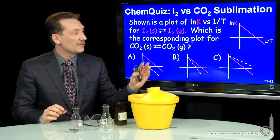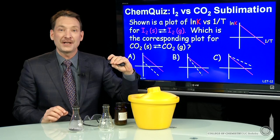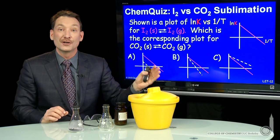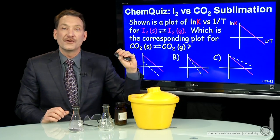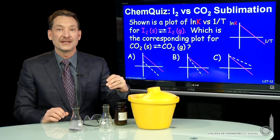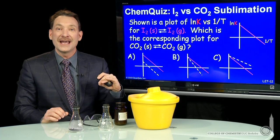So with that information, can we determine how the plot of lnK versus 1 over T look relative to each other? Well, lnK versus 1 over T, the slope is determined by the enthalpy, the intercept by the entropy.